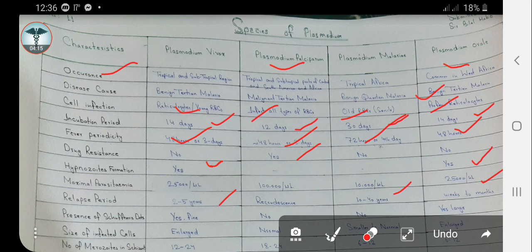Now, the presence of Schüffner dots, also called Schüffner bodies: Schüffner dots are seen only in Plasmodium vivax and Plasmodium ovale.